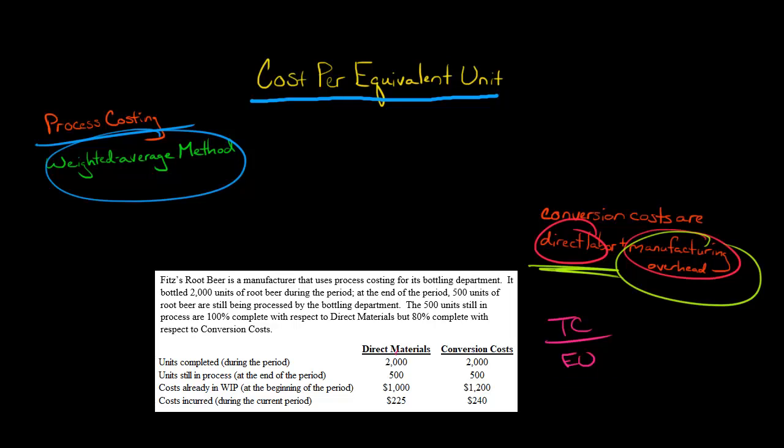There were 2,000 units completed, and there were 500 that were still technically in process at the end of the period. But with respect to direct materials, they were 100% complete. The equivalent units of these 500 that are still in process is 500 times 100%, so we don't need to really make an adjustment here. We just add up, and we've got 2,500.